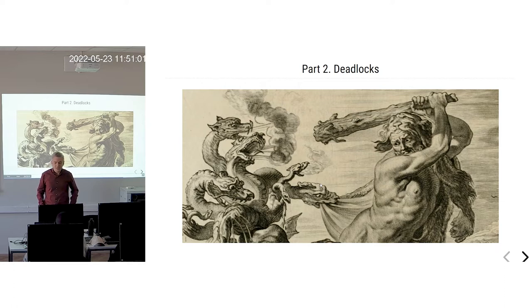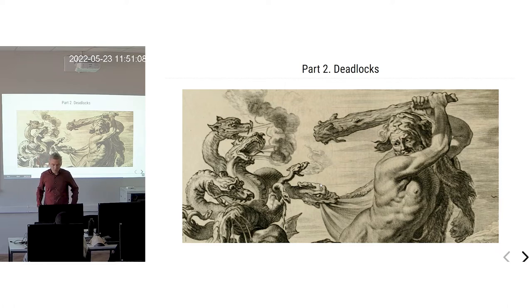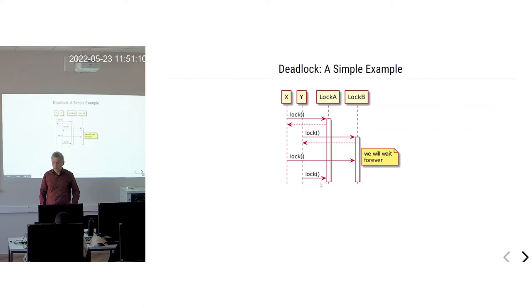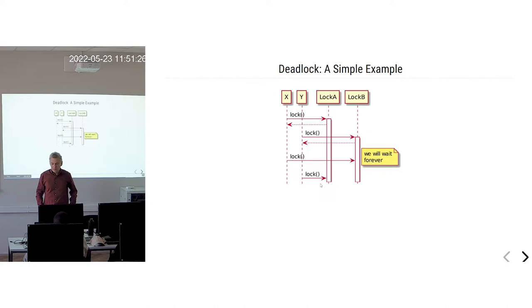There is also another danger related to locks called deadlocks. If you have more than one lock in your application, there might occur a situation called deadlock. There's a programming joke: when somebody is asked in an interview to explain what a deadlock is, they say 'Please hire me and I will explain you what a deadlock is.' So this is the best explanation.